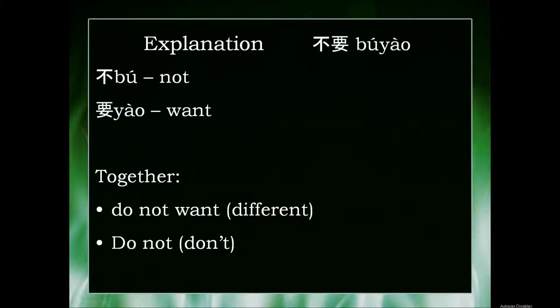Firstly, the first character is usually pronounced Bú in the fourth tone — it means 'not.' But because the second character immediately after it is Yáu in the fourth tone, the tone of the first one adjusts. This character can adjust tone, so it becomes Bú Yáu — rising, falling.